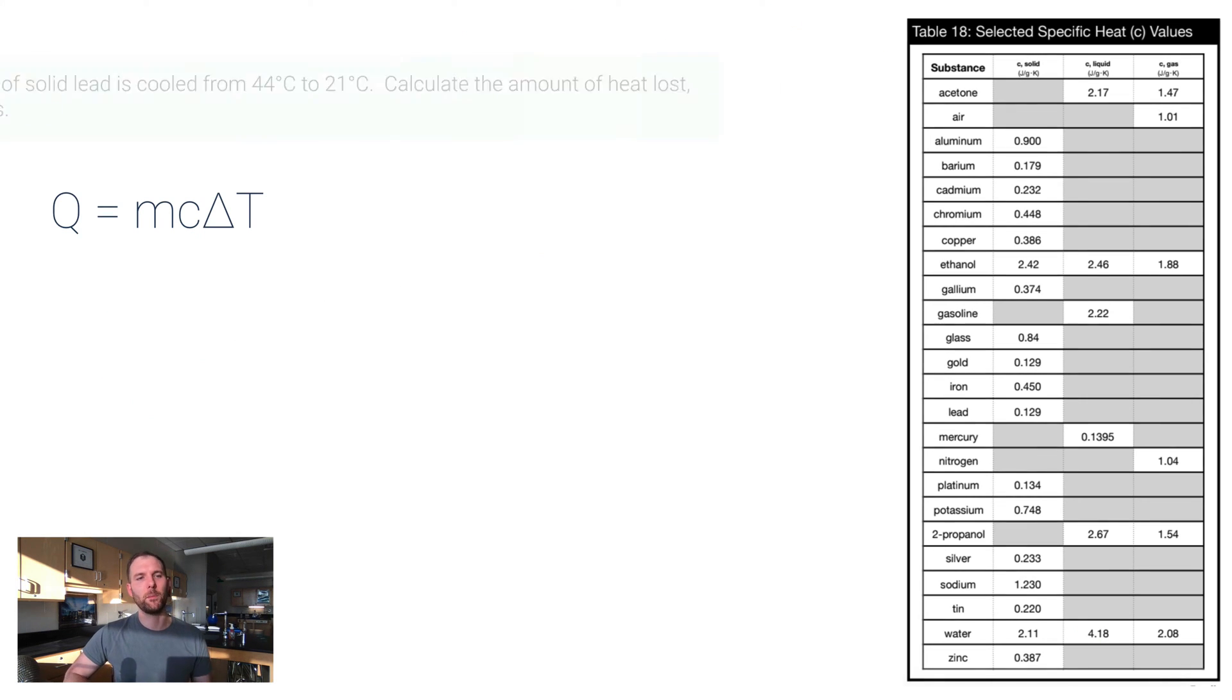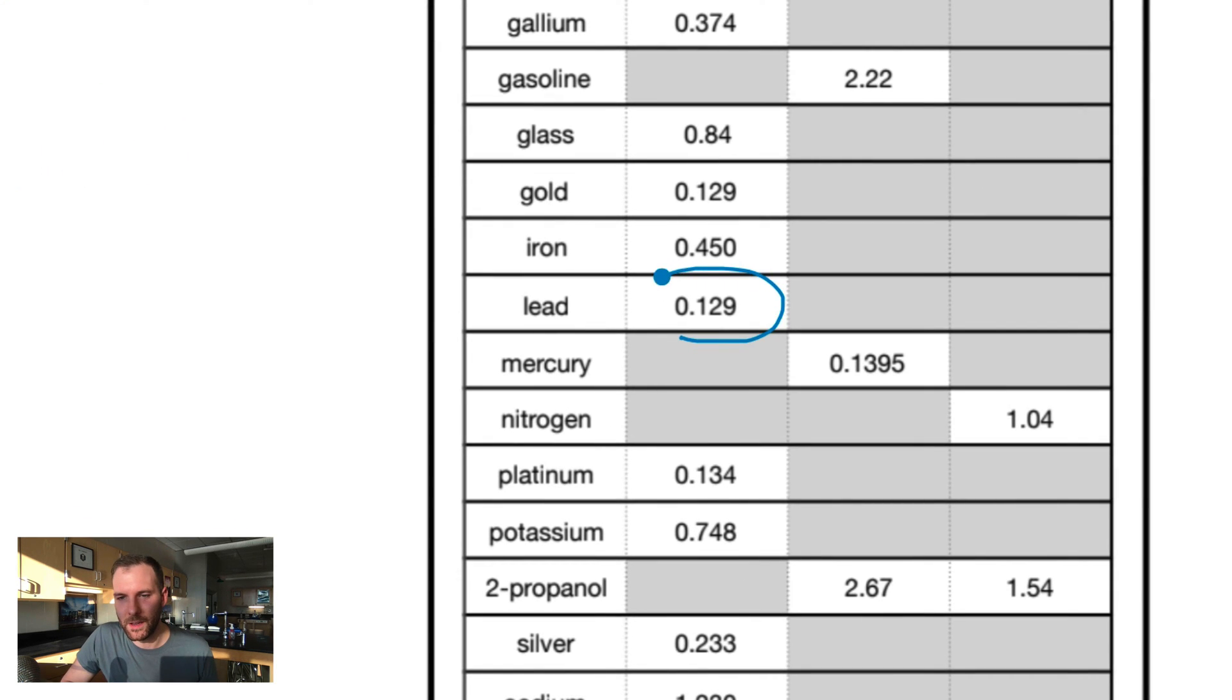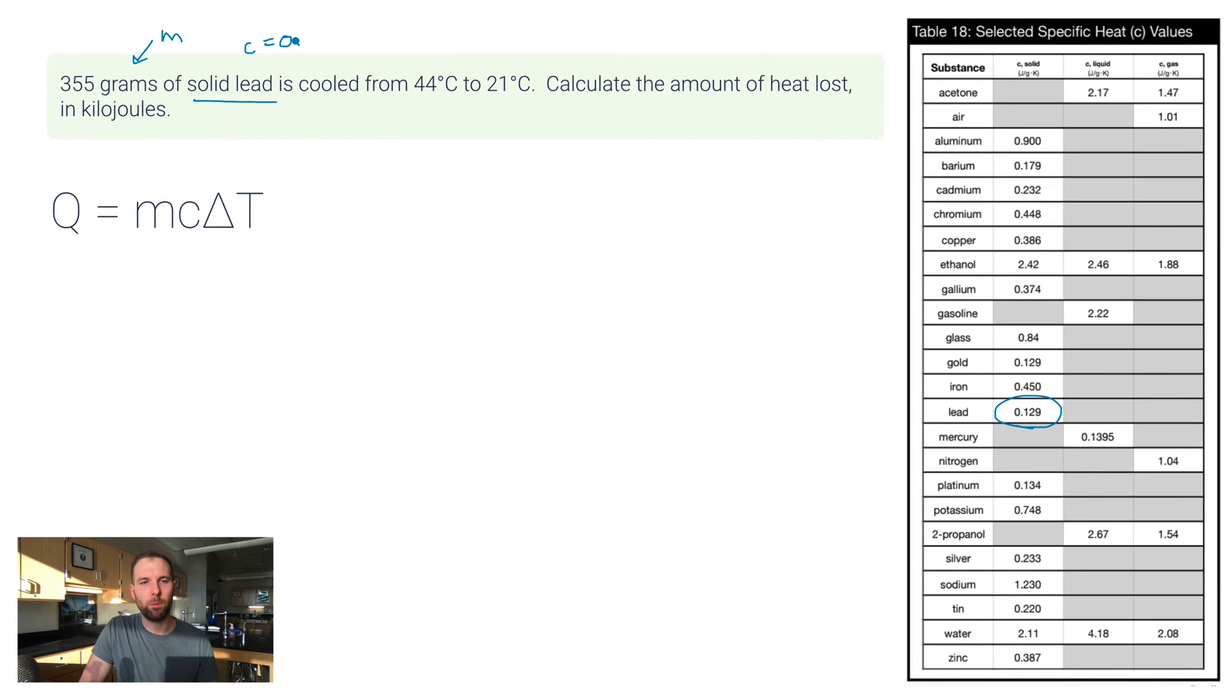Let me step it up for our next problem here. This says 355 grams—all right, pause, that's a mass of solid lead. Solid lead, that's got a specific heat of 0.129, so c is 0.129. It is cooled from 44 degrees Celsius to 21 degrees Celsius. So what's the delta T here? Fast way to do this is to take the final temperature and subtract from that final temperature the initial temperature. That'll make anything that's being heated positive and anything that's being cooled, like in this case, negative. So 21 minus 44 is negative 23 degrees Celsius. And then it says calculate the amount of heat lost in kilojoules. All right, let's hang on to the kilojoules part in a second. Let's use Q equals mc delta T here. Mass is 355 grams, c is 0.129 joules per gram degree Celsius, and my delta T is negative 23 degrees Celsius.